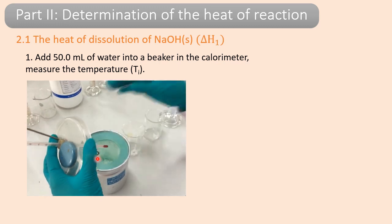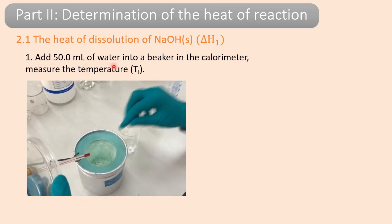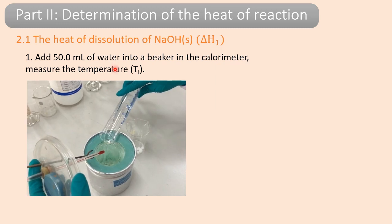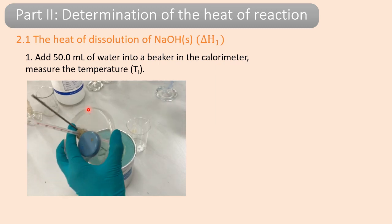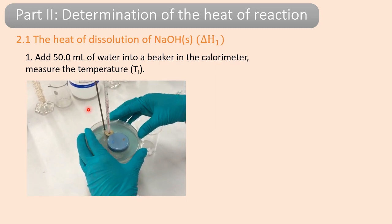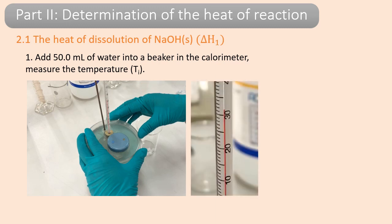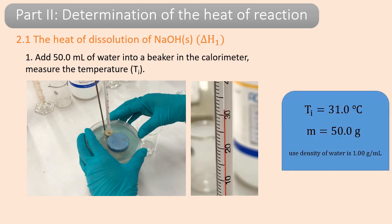We need a calorimeter again. Add 50 milliliters of water into the beaker, then cover it up and record the temperature — this will be your Ti, or initial temperature. We got the result: Ti is 31 degrees Celsius, and the mass of this water is 50 grams.